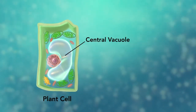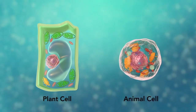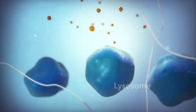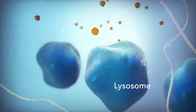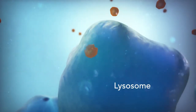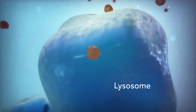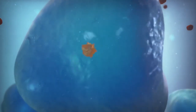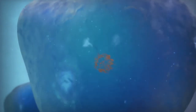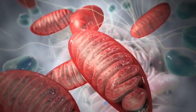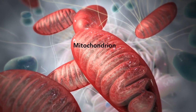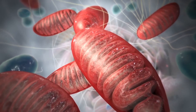Vacuoles are sac-like structures that store different materials. In a plant cell, the central vacuole stores water. In the animal cell, there is an organelle called a lysosome. Lysosomes are the garbage collectors that take in damaged or worn-out cell parts; they are filled with enzymes that break down this cellular debris. The mitochondrion is an organelle that is the powerhouse for both animal and plant cells.